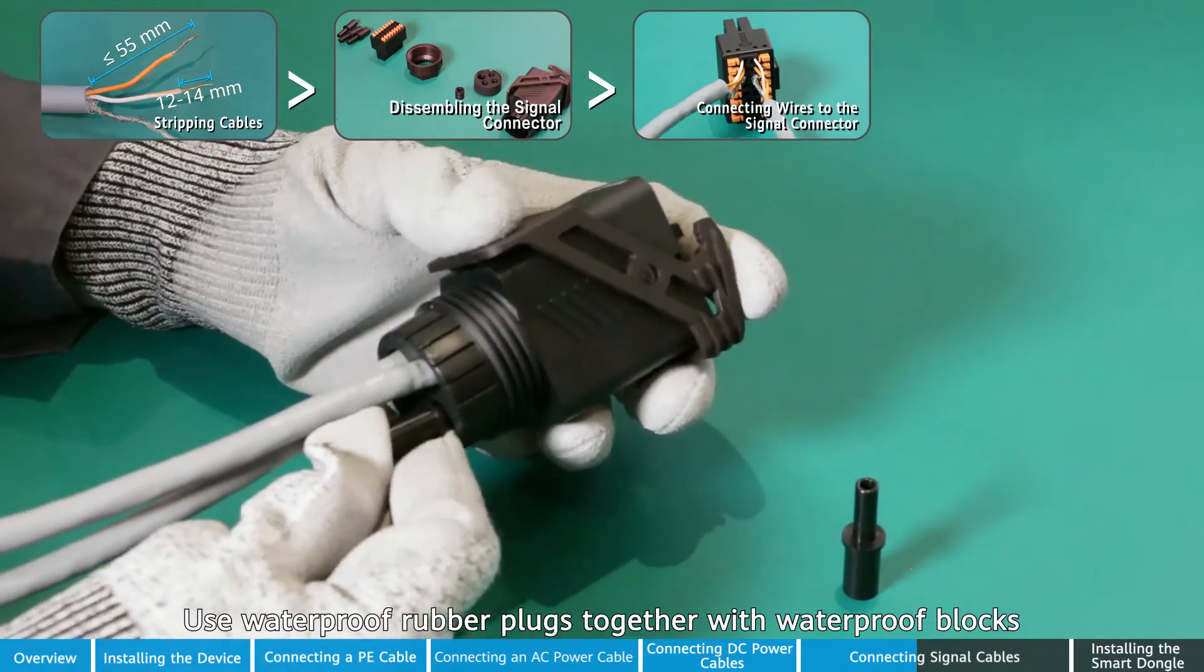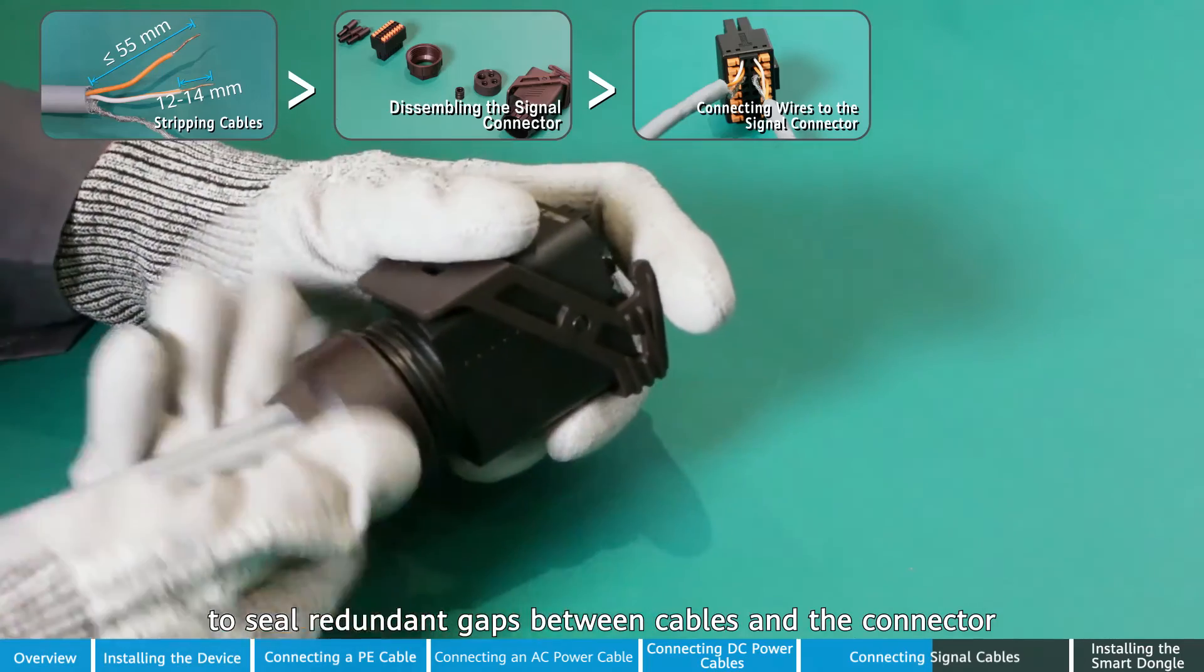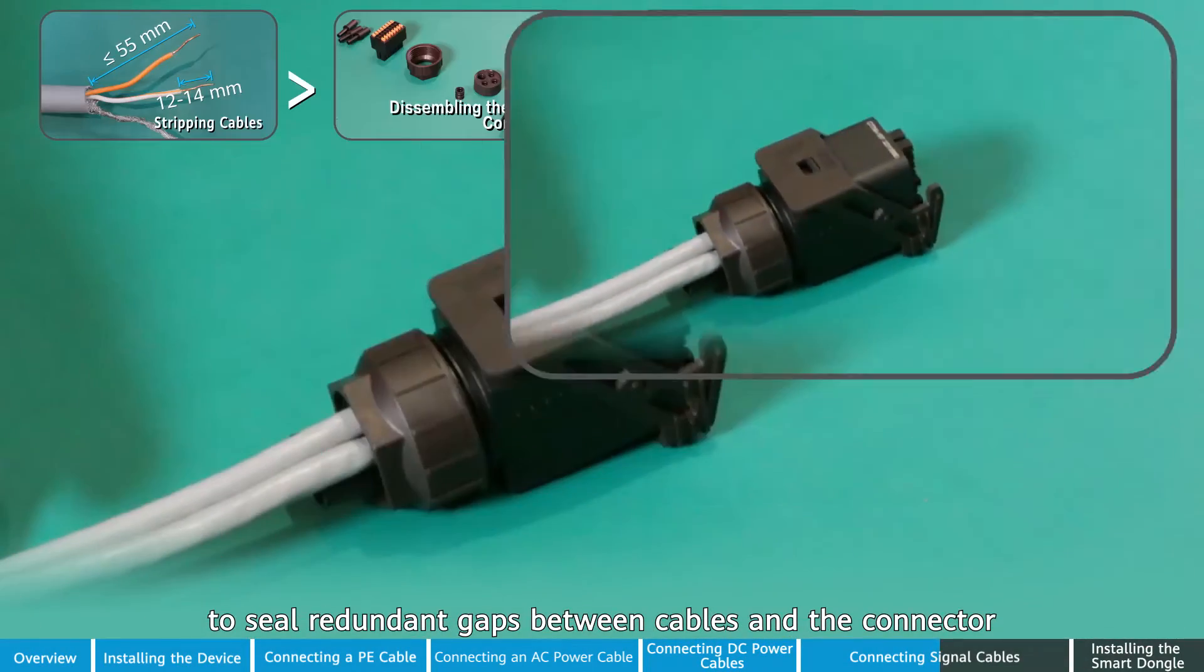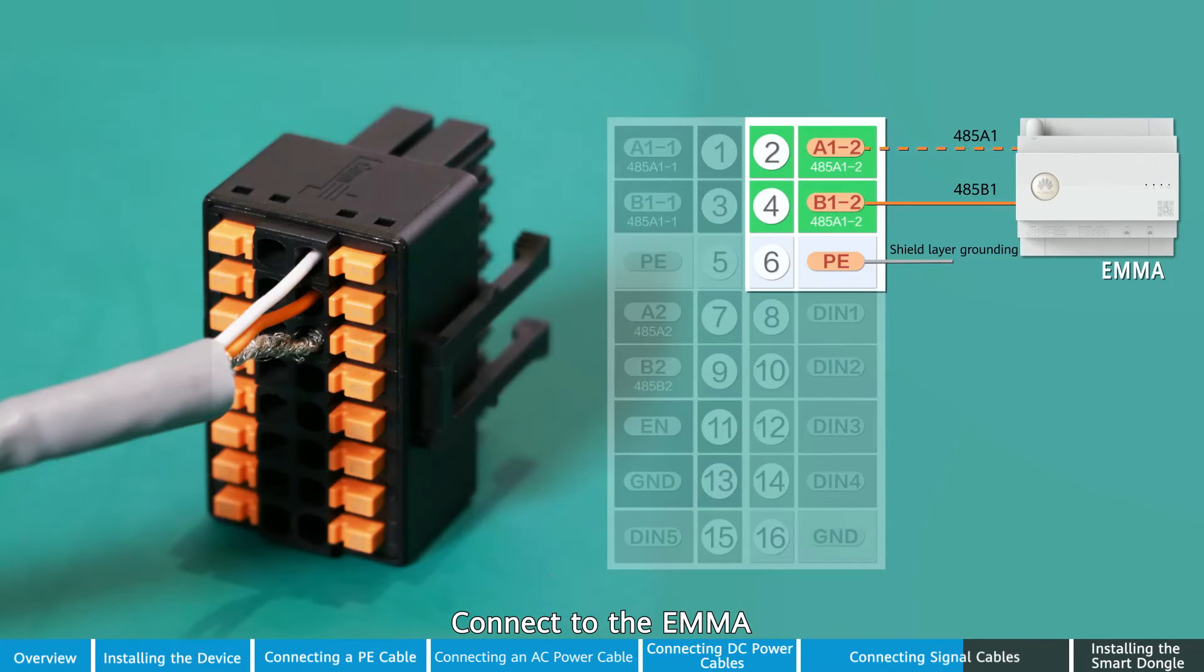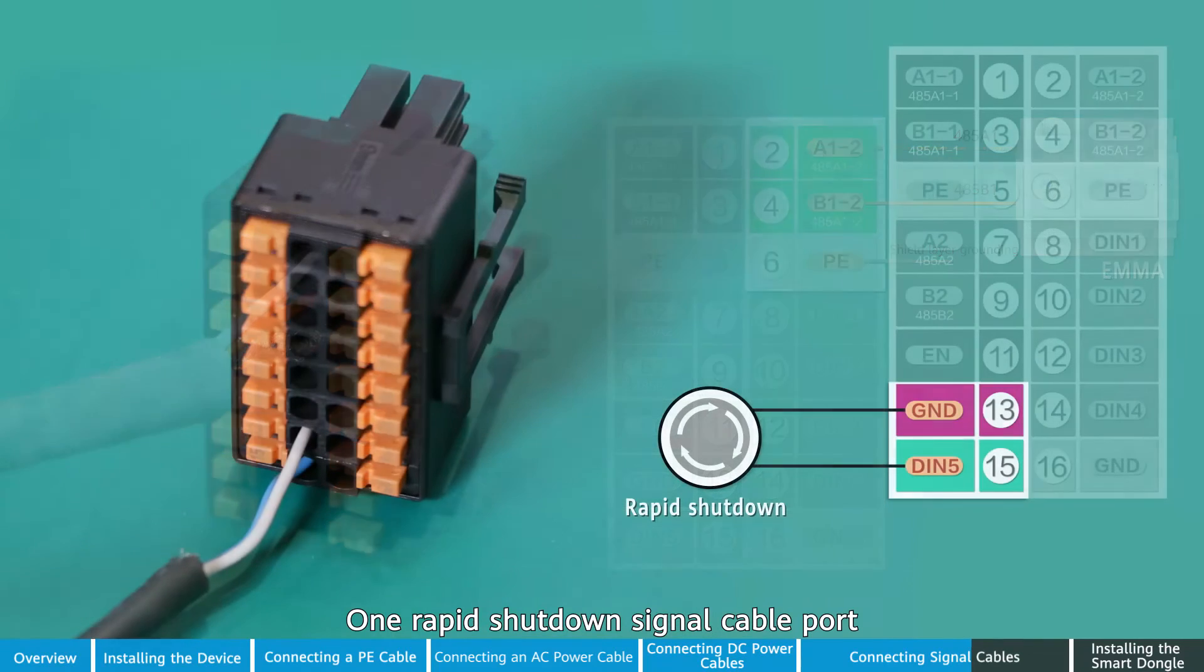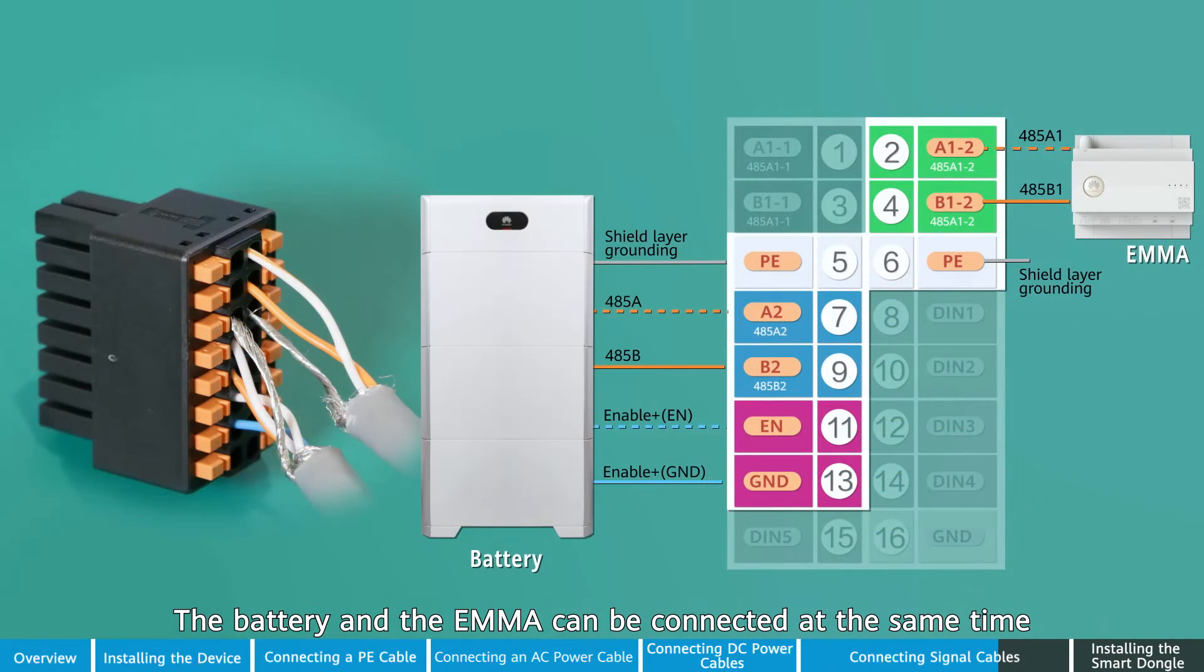Use waterproof rubber plugs together with waterproof blocks to seal redundant gaps between cables and the connector. Connect to the power meter. Connect to the EMA. One rapid shutdown signal cable port. Four dry contacts for grid scheduling. The battery and the EMA can be connected at the same time.